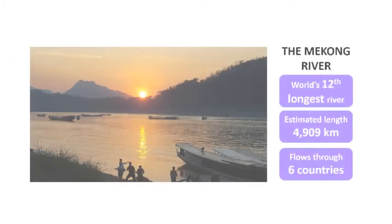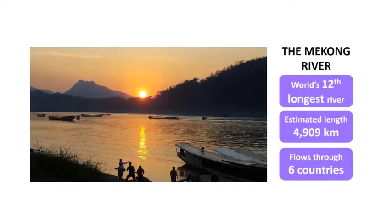When people think of shipping, they usually think of ships sailing in the open seas. However, rivers also form a critical part of the water transportation system. For example, the Mekong River is one of the world's great river systems, flowing 4,909 kilometres through 6 countries. Since historical times, it has played a key role in trade and transportation through these countries, long before highways or air routes came along.